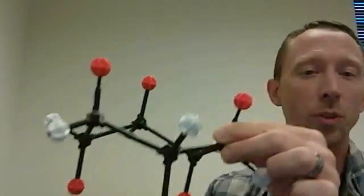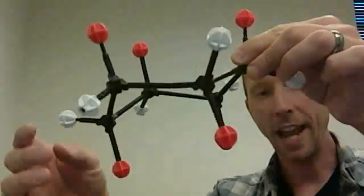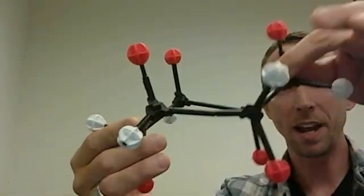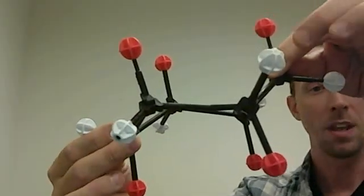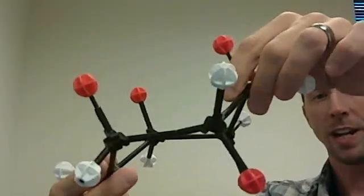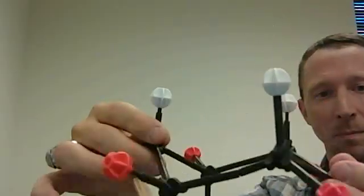But I can do something called a ring flip to this model, and all I have to do to effect the ring flip is to take my ottoman and make it my footrest. Take my footrest and make it my ottoman. Let's watch what happens when I do that. You ready? Here we go. Ring flip.